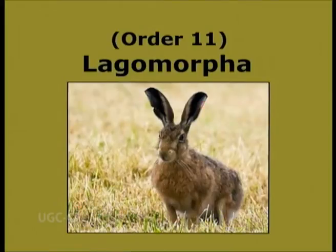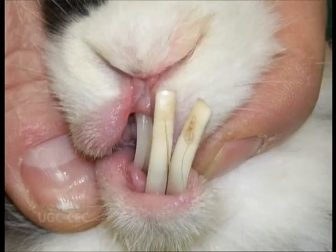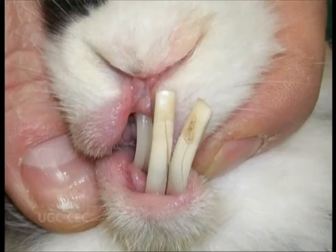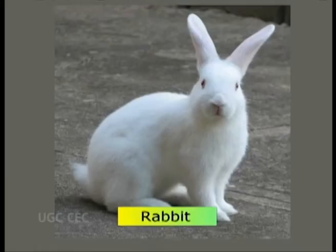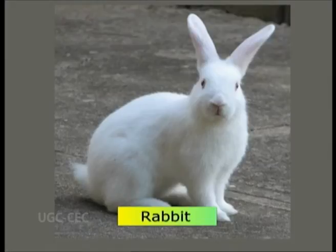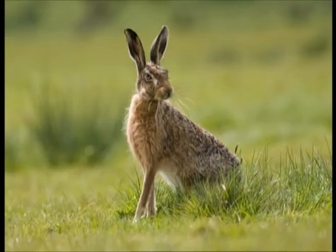Order 11: Lagomorpha. Logos meaning hare, Morphe meaning form — animals like hares. They have a first pair of large chisel-like incisors and a second pair of small upper incisors. No canines are present. Examples of this order are rabbit, hare, etc.